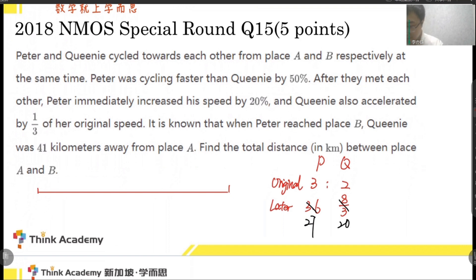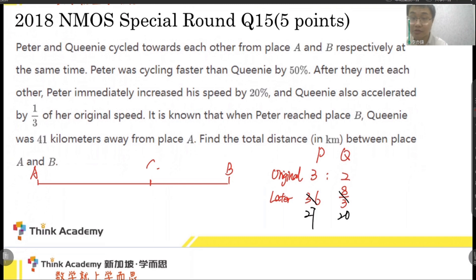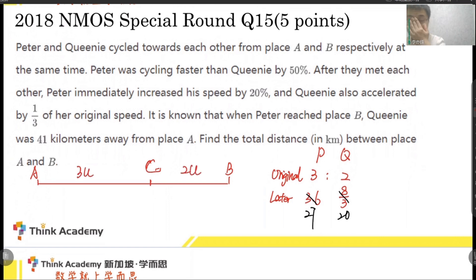First, they meet together — meeting is a same-time process. When they meet, the ratio of distance equals the ratio of speed. Since the speed ratio is 3 to 2, the distance ratio is also 3 to 2. So we let AC equal 3U and BC equal 2U.